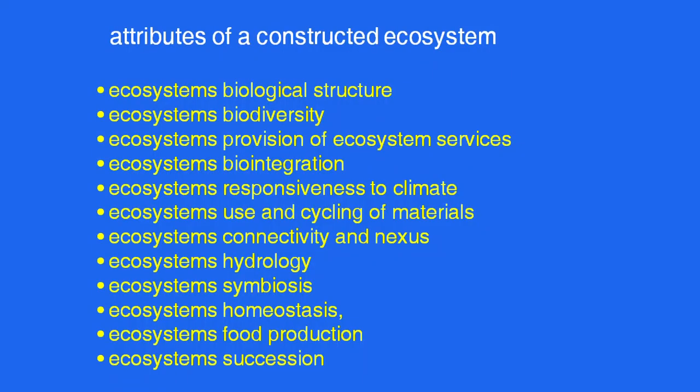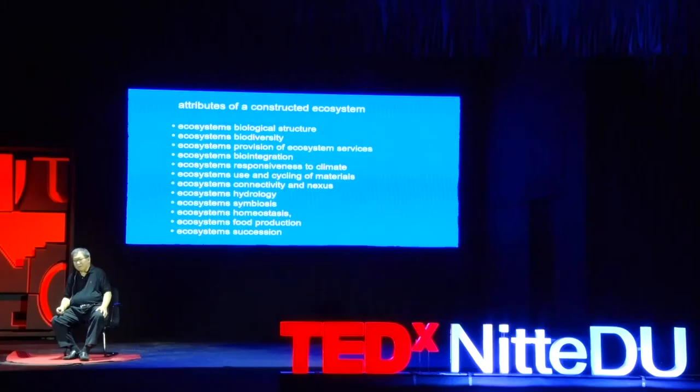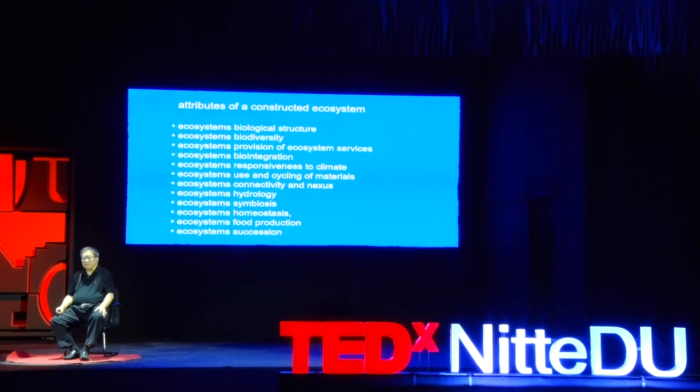What are the attributes of ecosystems that we need to emulate and replicate in our cities? We need to emulate the ecological and biological structure of ecosystems, the biodiversity, provision of ecosystem services, biointegration, responsiveness to climate, use and cycling of materials, connectivity and nexus, the hydrology of cities, the symbiosis between our built environment and the natural environment, homeostasis in ecosystems, and food production and succession.